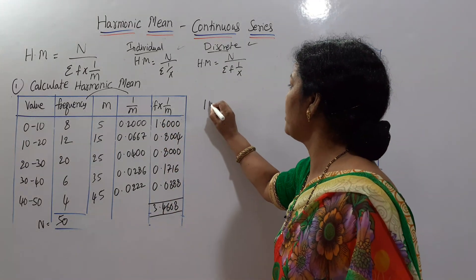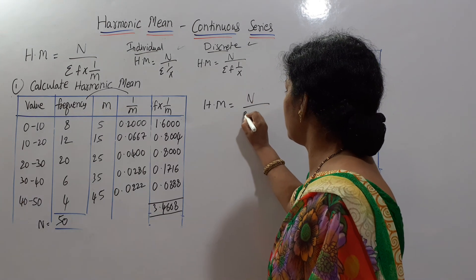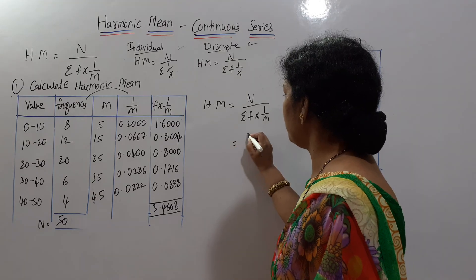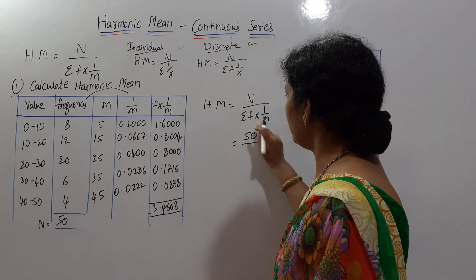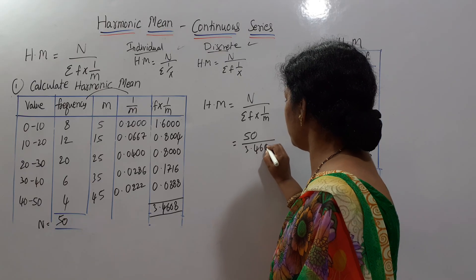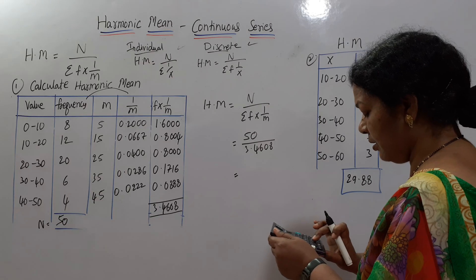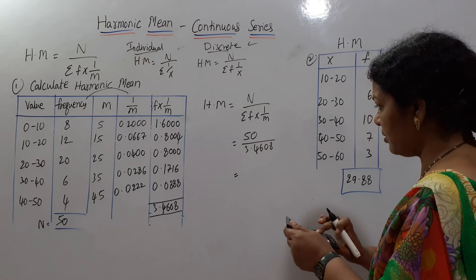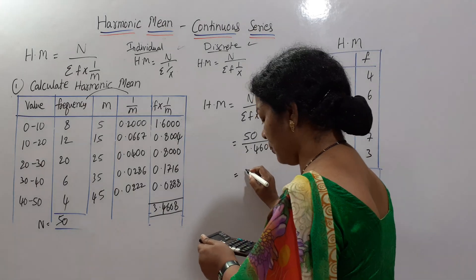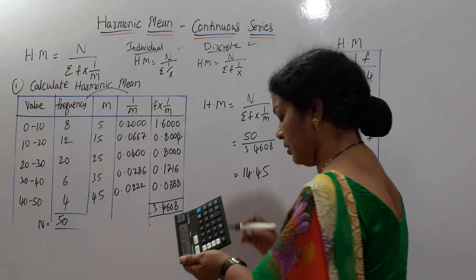Applying the formula: harmonic mean equals n by sigma f into 1 by m, which is 50 divided by 3.4608, giving us 14.45. This is the answer.